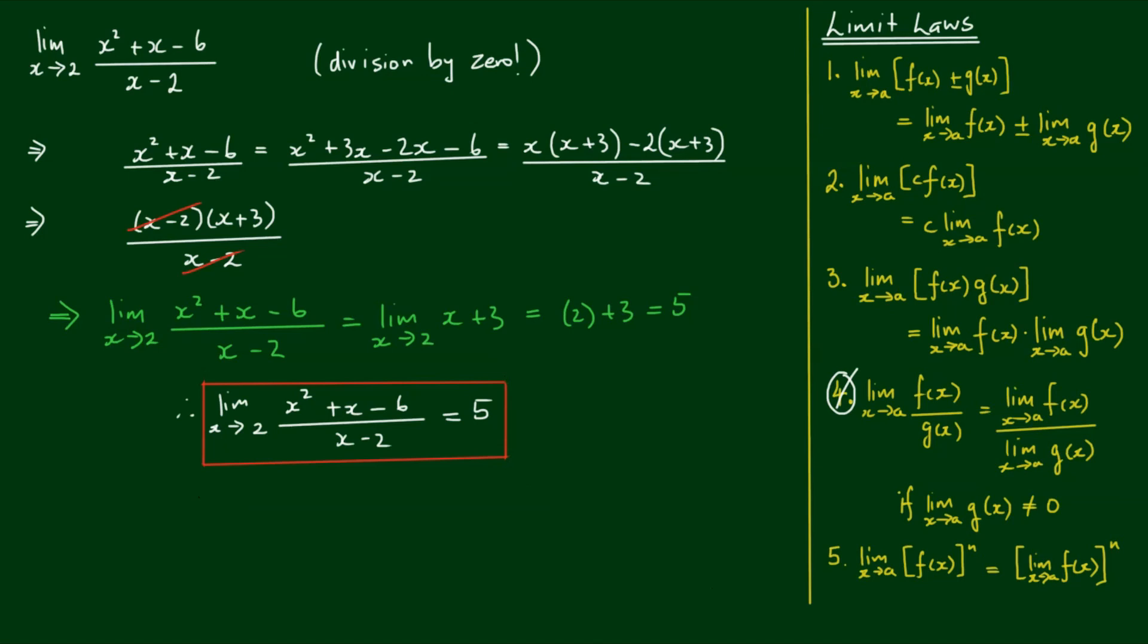Now something to be very careful of here is that if I define the function y is equal to x squared plus x minus 6 on x minus 2, we can't just say that this is equal to x minus 2 by x plus 3 on x minus 2, and then cancel out the factors to give us y is equal to x plus 3. These two terms here are not exactly equivalent, and I'll show you why now.